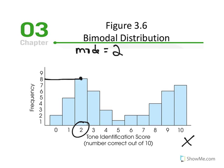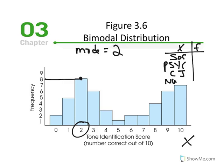It's even more common when the distribution is nominal, when we have named categories, and students want to report the frequency versus the x value. For example, looking at majors represented in a class: sociology, psych, criminal justice, and nursing. If we have a frequency of 8 sociology majors, 25 psych majors, 5 criminal justice, and 5 nursing, and we're asked to report the mode,